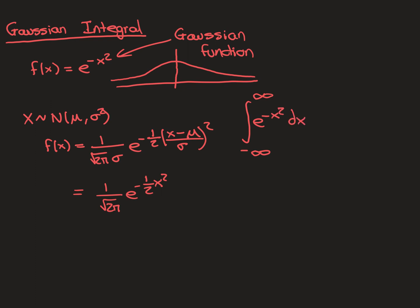From what I've already told you, you can already work out what this integral is going to come out as. The normal distribution that has e^(-x²) needs mu = 0 and sigma squared = 1/2, giving 1 over the square root of π times e^(-x²) as the PDF. Since PDFs always integrate to 1, the integral of e^(-x²) must be the square root of π.